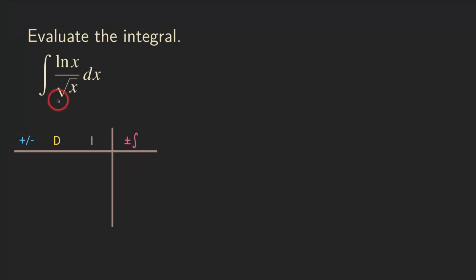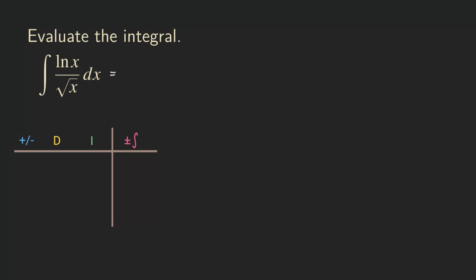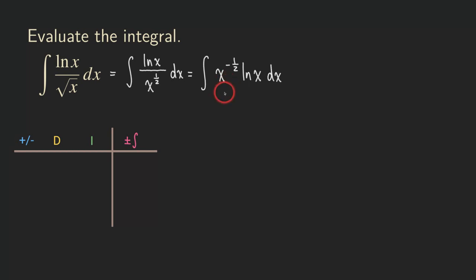Let's get started. First, we rewrite this integral so that it looks like a product. We write the square root of x in the form of x to some power. We bring the square root of x — written as x to the 1/2 — up to the numerator by changing the exponent to a negative exponent, since we are taking the reciprocal. So we get x to the negative 1/2 times ln(x) dx, which is now clearly a product.